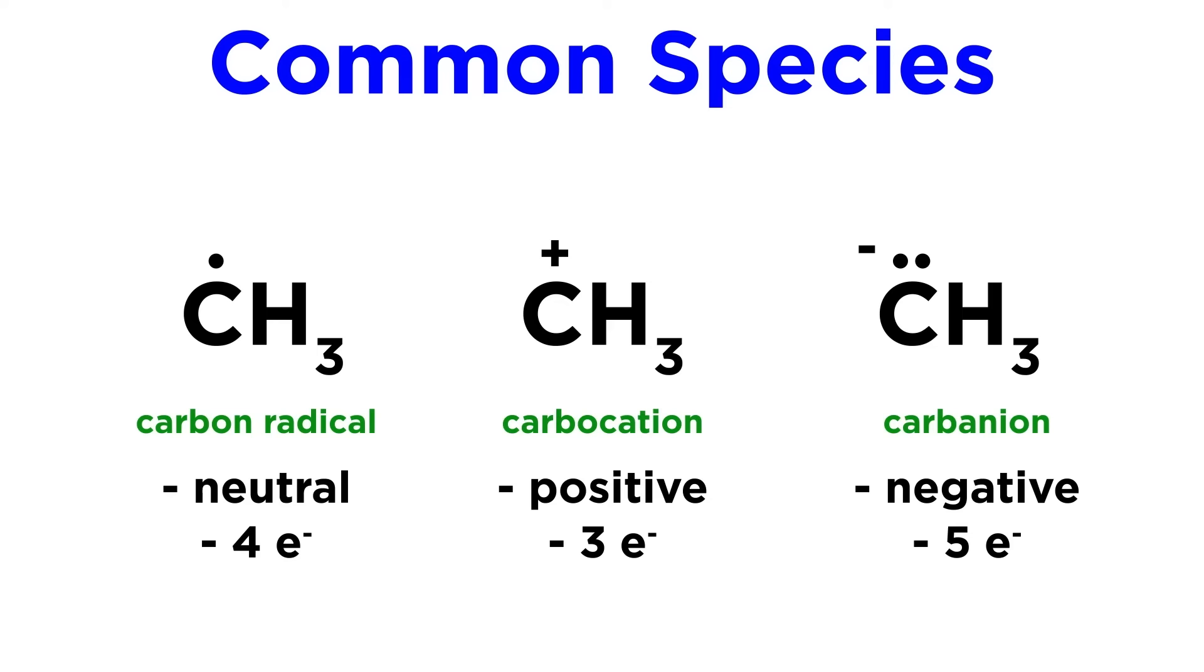Carbon has four valence electrons, but the electrons being contributed to these structures are four, three, and five, respectively. So a carbon radical is neutral, just like a carbon that is participating in four bonds, a carbocation has a formal positive charge, and a carbanion has a formal negative charge.